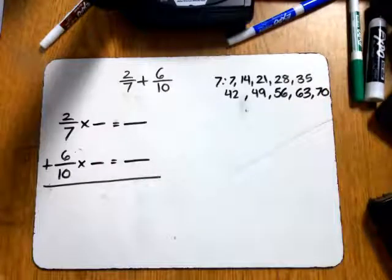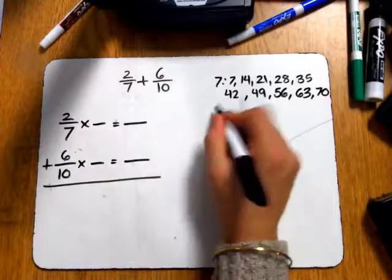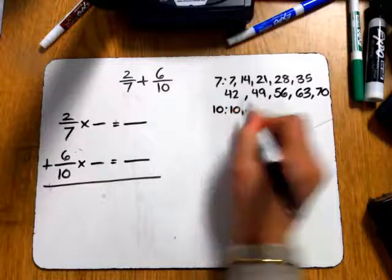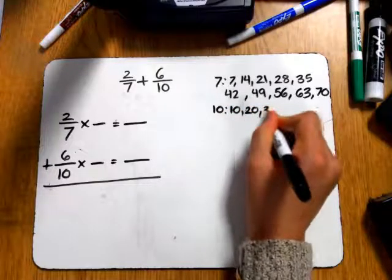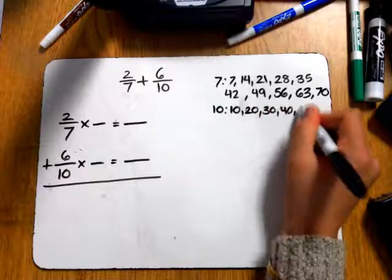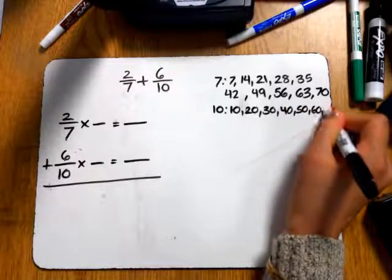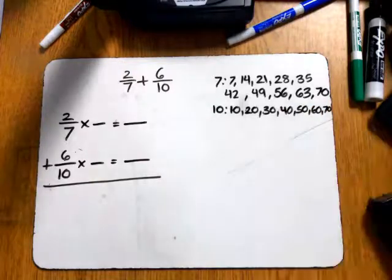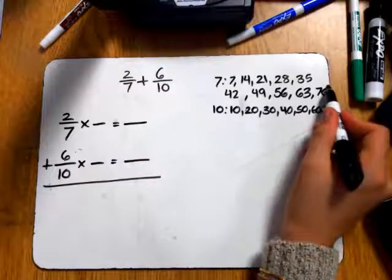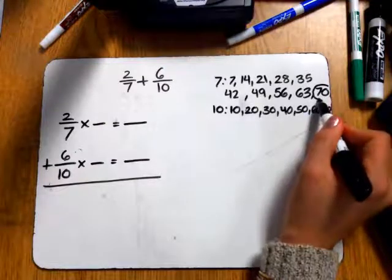So I'm going to stop there because I can already tell you that's going to be my LCD. And then for 10, you're just counting by 10s. 10, 20, 30, 40, 50, 60, and 70. So 70 is my LCD, and that is a big number, but that is the smallest number those two numbers have in common.